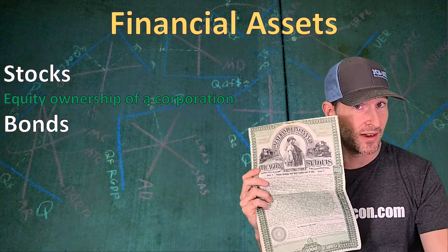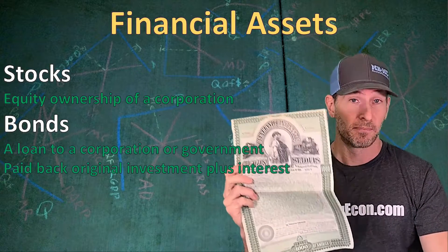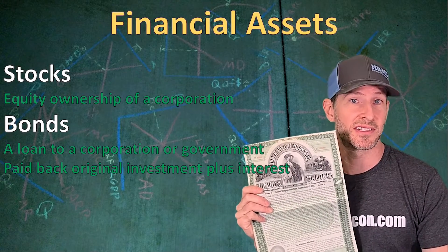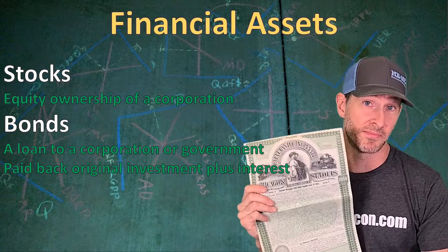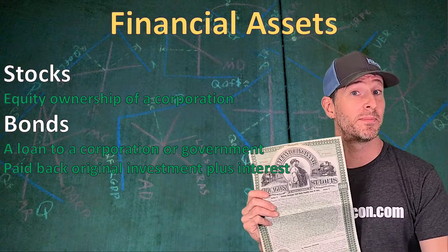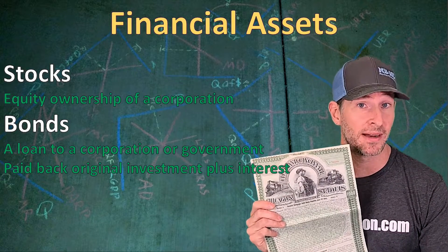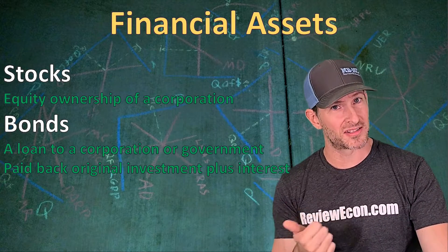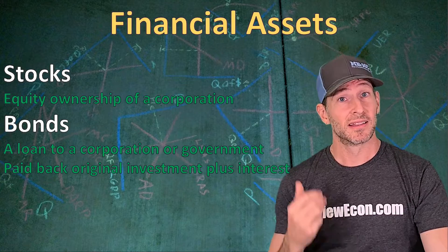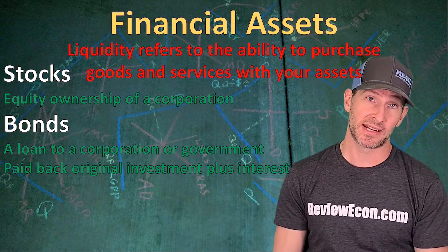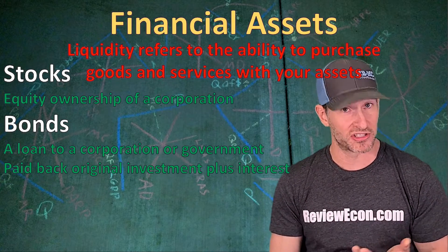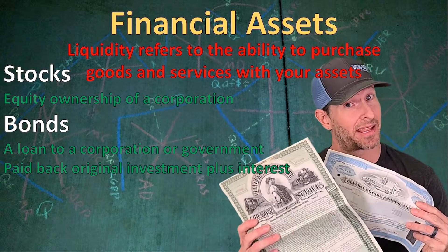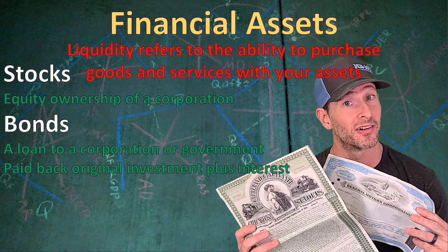Another place to put your wealth is in the form of bonds. Bonds are loans to a corporation or a government. The person who purchases these bonds is essentially loaning money to the business or the government, and they will be paid back with their original amount — the principal — plus interest over time. The problem with stocks and bonds is they are not immediately liquid. Liquidity refers to the ability of an asset to be used to purchase goods and services. I can't purchase goods and services with a stock certificate, and I can't purchase them with a bond either.